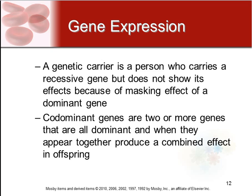If somebody has a dominant gene, that's what will be expressed. If they have two recessive genes, the recessive trait will show. If they have one dominant and one recessive, the dominant gene wins. They could also have a co-dominant gene, which means there are two or more genes that are both dominant, appearing together to produce a combined effect in the offspring.